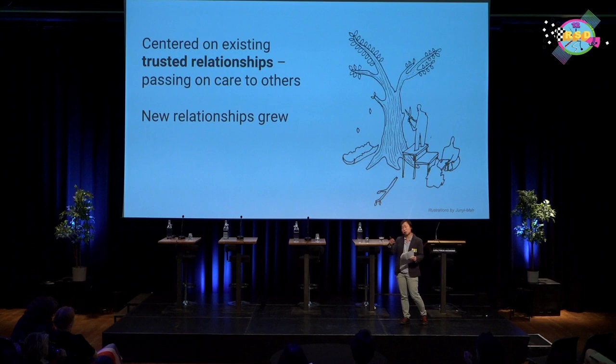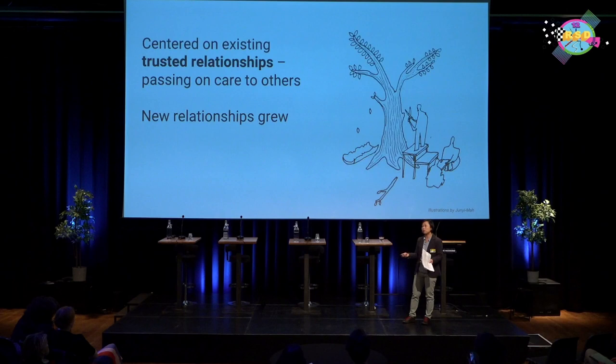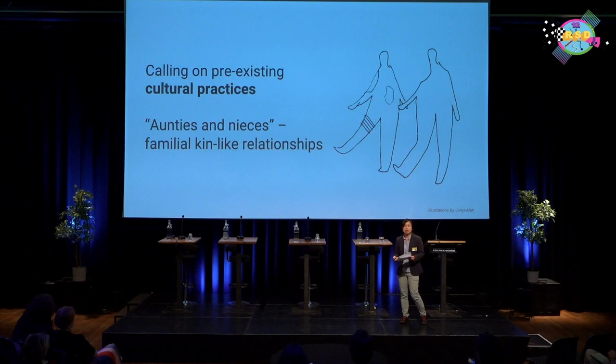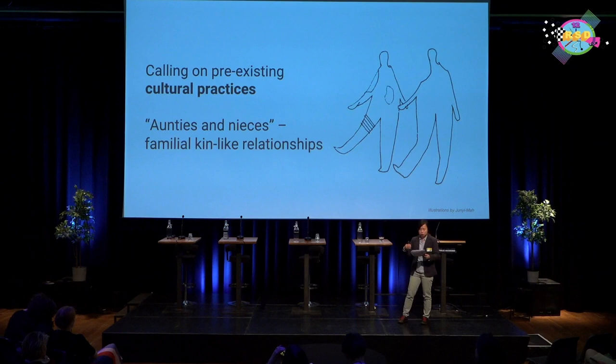New relationships grew from that. Networks brought in by the mentors and mentees allowed burgeoning new relationships — some mentees even used bursary money to help pay for English classes for their own community, demonstrating tangible and intangible flows through these relationships. We also relied on cultural practices and cultural memories. We started using the terms 'aunties' and 'nieces' to address mentors and mentees — in Southeast Asian cultures, 'aunty' is a friendly honorific for someone older but not necessarily with blood ties, evoking warmth, affection, and kin-like relationships that go beyond the formal terms of mentor and mentee, calling on cultural memory of community and kinship groups.